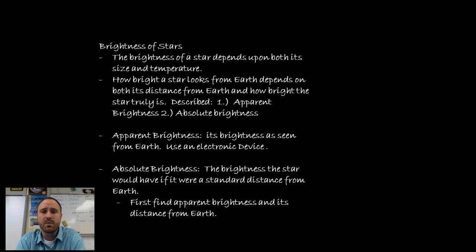And there's also something that's considered absolute brightness. To get the absolute brightness what we have to do is first find the apparent brightness and then we have to also figure out what its distance from earth is. We combine those two together to give us an absolute brightness. The absolute brightness is the brightness the star would have if it were a standard distance from earth.